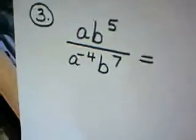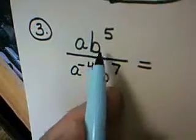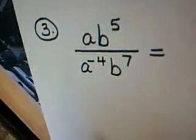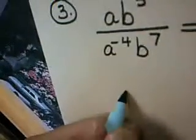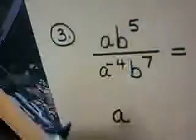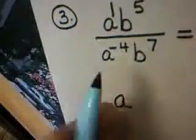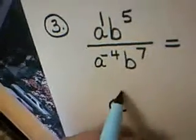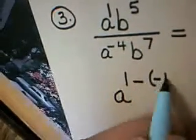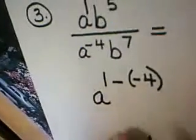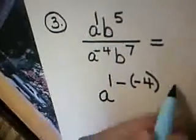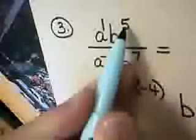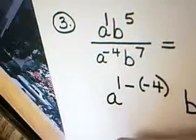Question number 3: I have ab to the fifth divided by a to the negative 4th, b to the 7th. Laws of exponents tell us when you're dividing, exponents get subtracted. You leave the base the same, so I'm going to leave the a the same. The top exponent is a 1, the bottom is a negative 4. Watch what happens: 1 minus a negative 4 is what the new exponent on the a is going to be. And while we're subtracting, let's do it for the b. We would have b raised to the 5 minus 7 power.